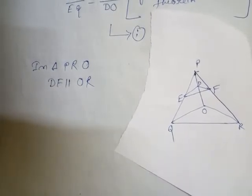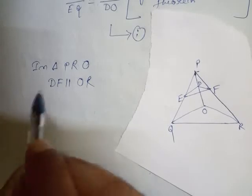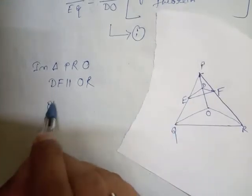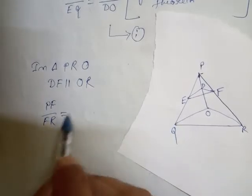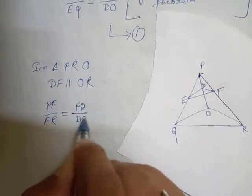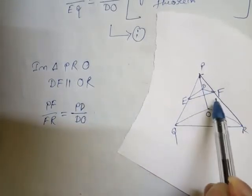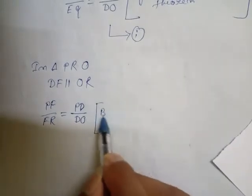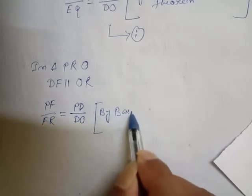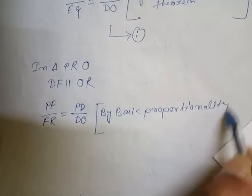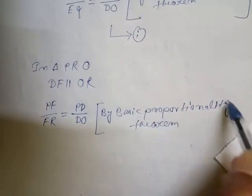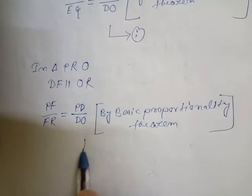So here we write: PF by FR equals PD by DO — by the Basic Proportionality Theorem. This is our equation number two.